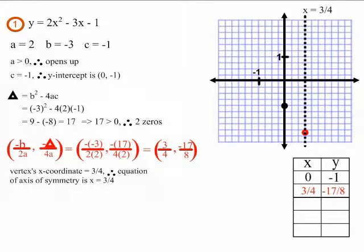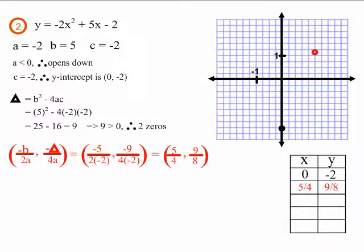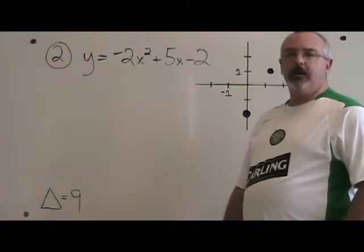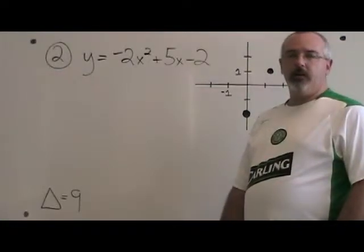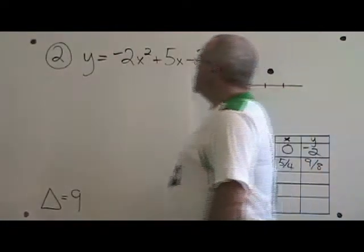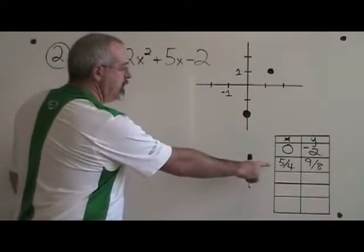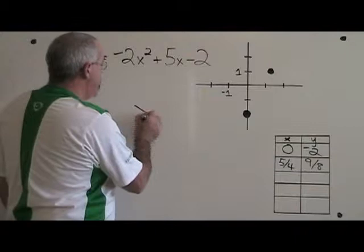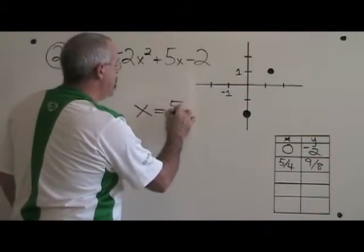This is what example one looks like after finding the equation of the axis of symmetry. This is what example two looks like before. To find the equation of the axis of symmetry, we need to know the x coordinate of our vertex. The x coordinate of our vertex is 5 fourths, so the equation of the axis of symmetry is x equals 5 fourths.